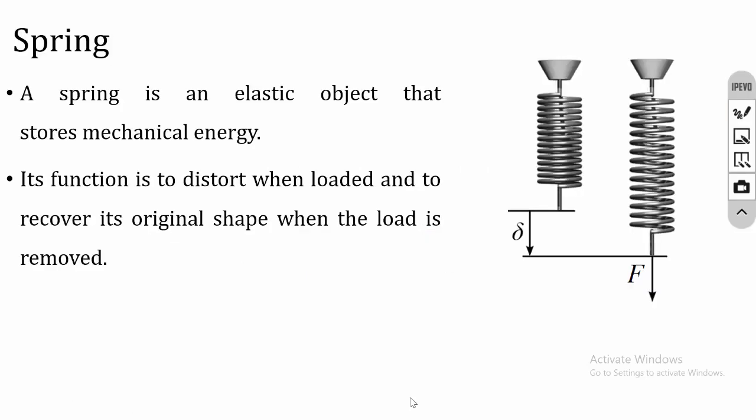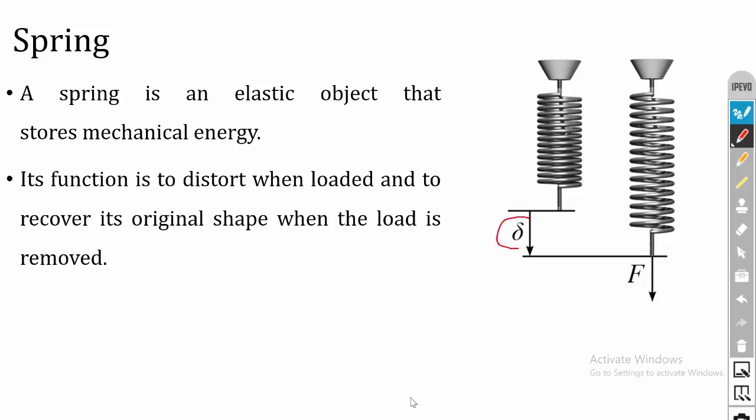A spring is an elastic object that stores mechanical energy. The spring absorbs mechanical energy when it is subjected to external loading and releases the energy when the external load is removed. When the spring is subjected to a compressive load, deflection takes place — named as delta (δ). Since the spring is an elastic member, when the load is released, the spring returns to its original position.